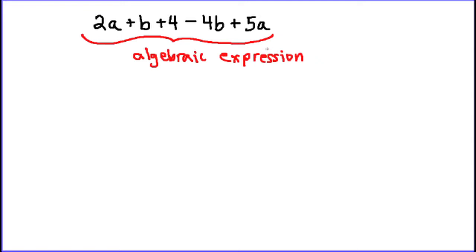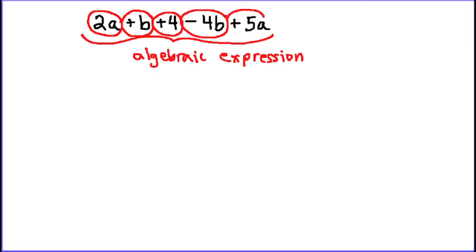Now the first thing I notice when I look at this is that there are 1, 2, 3, 4, 5 different pieces, and I'm going to circle each of them. 2a is one part, that plus b is another part, plus 4 is another part, minus 4b is another part, and plus 5a is a fifth part. These individual pieces are what we call terms — the individual parts that make up the expression, kind of like how there are individual words that make up a sentence.